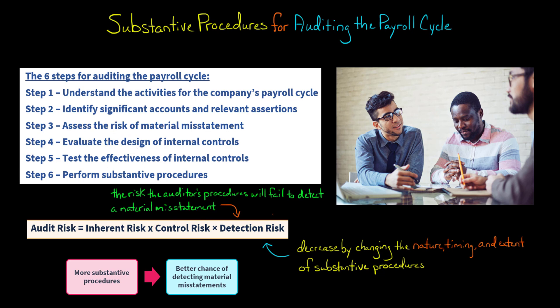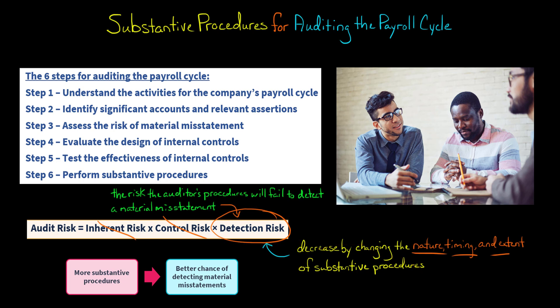In this video, we're going to talk about detection risk, which is the risk that the auditor's procedures would fail to detect a material misstatement. Whereas the auditor has no control over inherent risk or control risk, the auditor does control the level of detection risk. By changing the nature, the timing, and the extent of the substantive procedures, the auditor can increase or decrease detection risk. In short, more substantive procedures means a better chance of detecting material misstatements, and thus a lower level of detection risk.